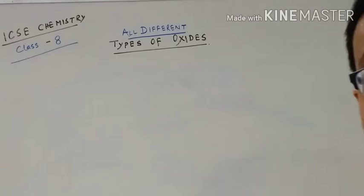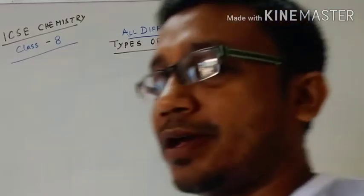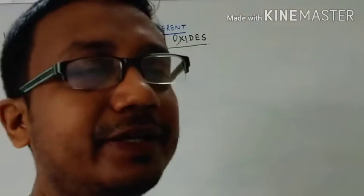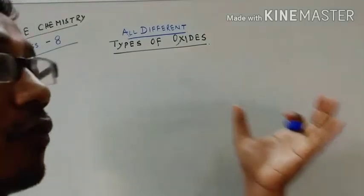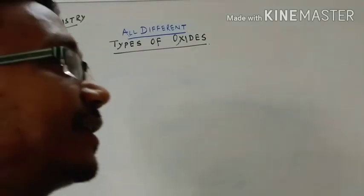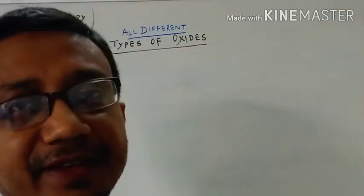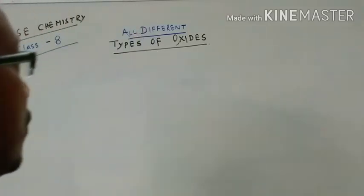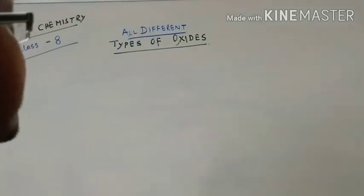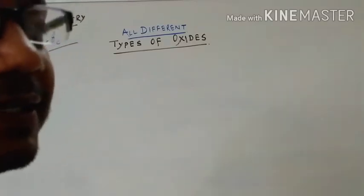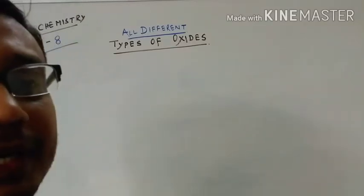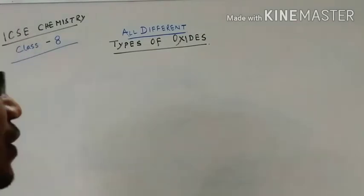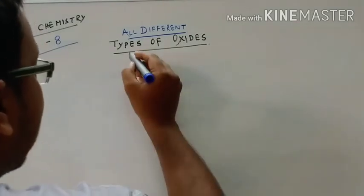In this chapter we are going to learn what types of oxides are there, how many types of oxides are there, and their different characteristics. Now, oxides means that oxygen should be present in that compound.